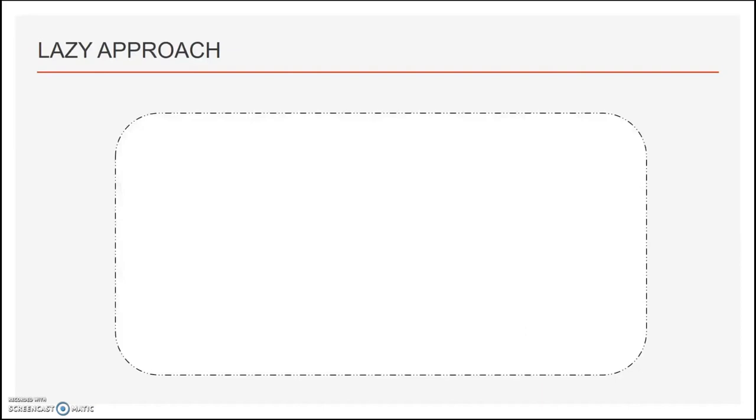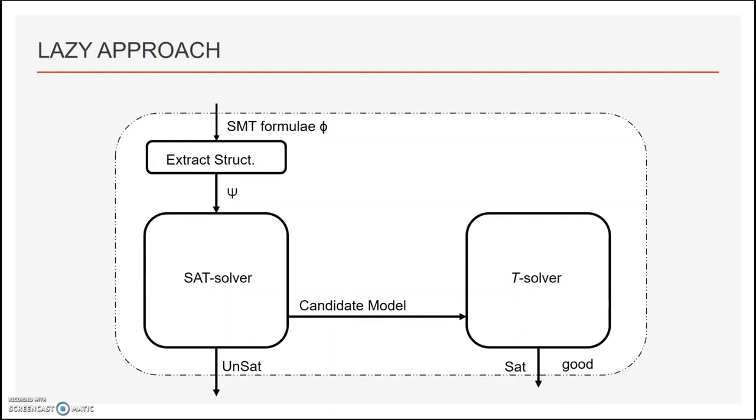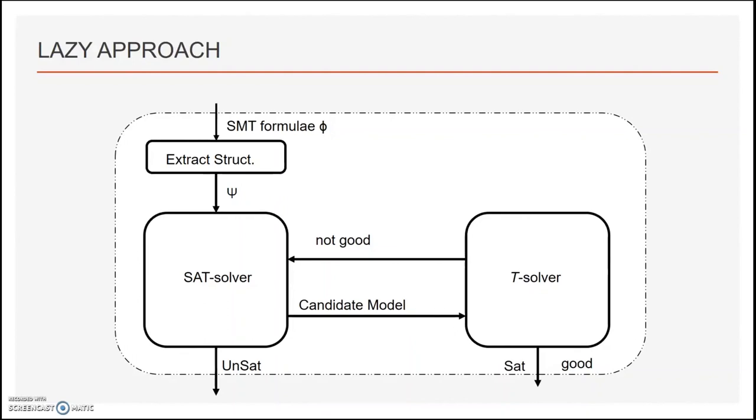The lazy approach uses a solver which consists of structure extractor. SMT formula is passed into this structure extractor which extracts the structure and passes it on to SAT solver. SAT solver then takes a model if the formula is satisfiable and gives it to T solver. If the formula is not satisfiable, it returns unsat. T solver checks for the compatibility of the model. If it's compatible, it returns SAT and if it's not, it returns not good. In turn, SAT solver adds the negation of and of all the models in the new formulae. Let's take an example.